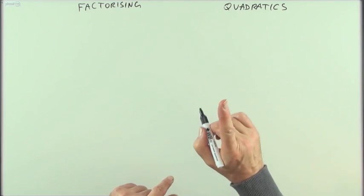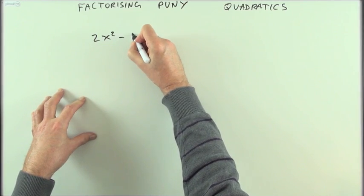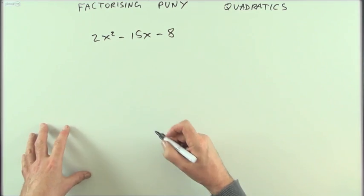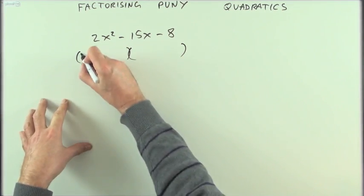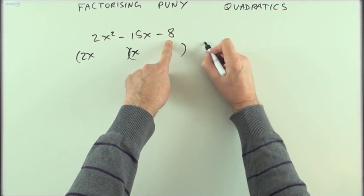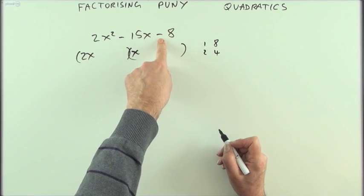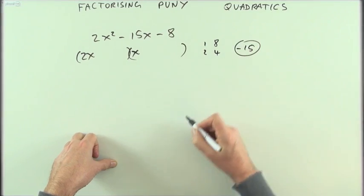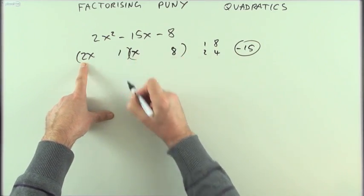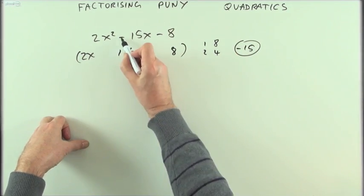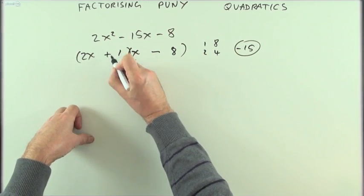I want to factorize quadratics, but not puny quadratics like 2x² - 15x - 8, where the factors are obvious. It can only be 2x times x that produces the 2x², and the 8 can only have come from 1 and 8, or 2 and 4. For the middle term I want a difference of 15, and whichever occupies this space will be doubled — it must be the 8 there and the 1 there: 16 take away 1. The negative goes to the larger, so the signs must be opposite.